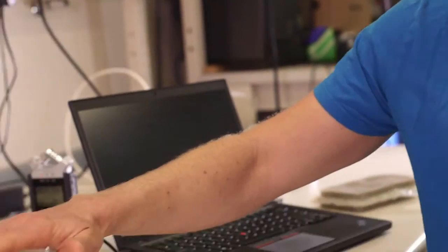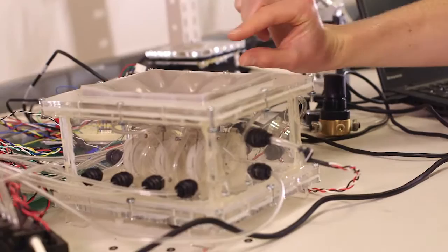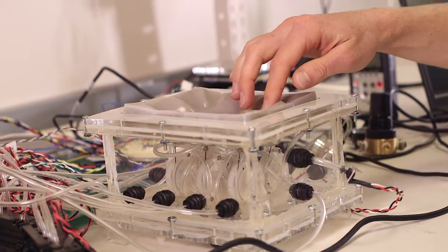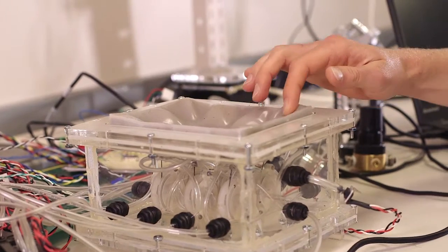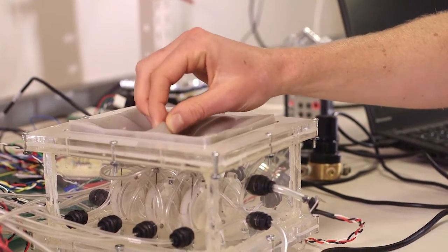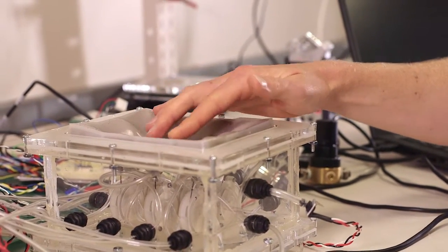So the main part here is this silicone membrane and it's a pretty thin layer here and it has all these individual pockets inside of it that we've actually filled with coffee grounds. So it's using this technology called particle jamming where normally when you have a flexible membrane filled with a granular material, it's very soft and pliable.